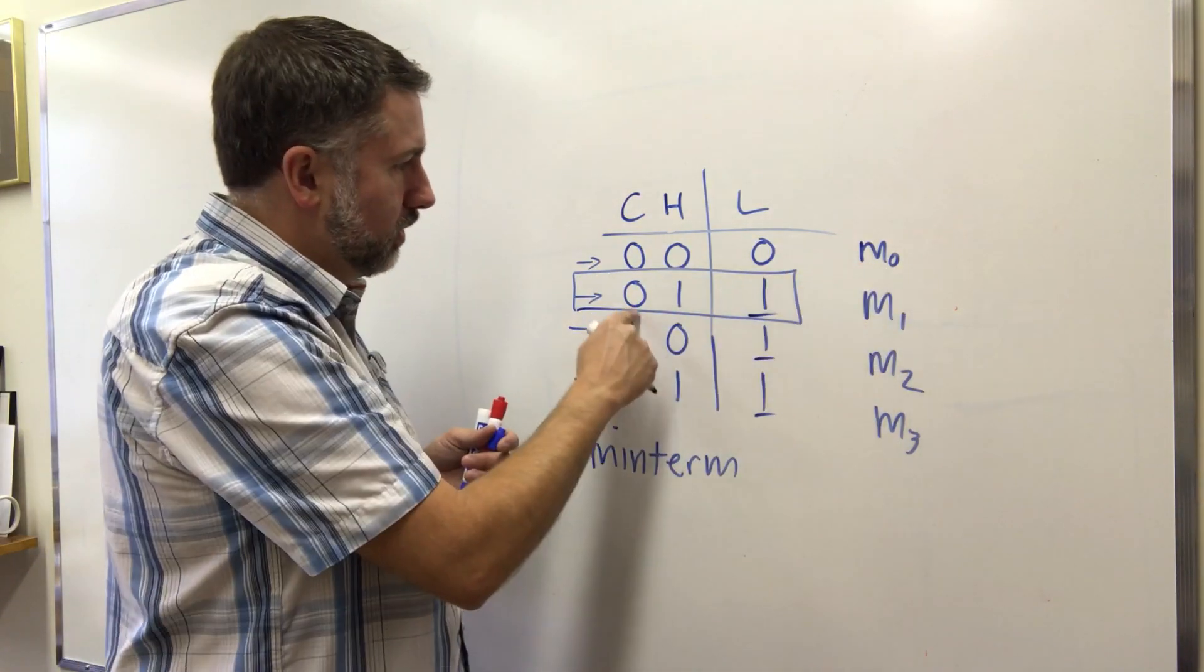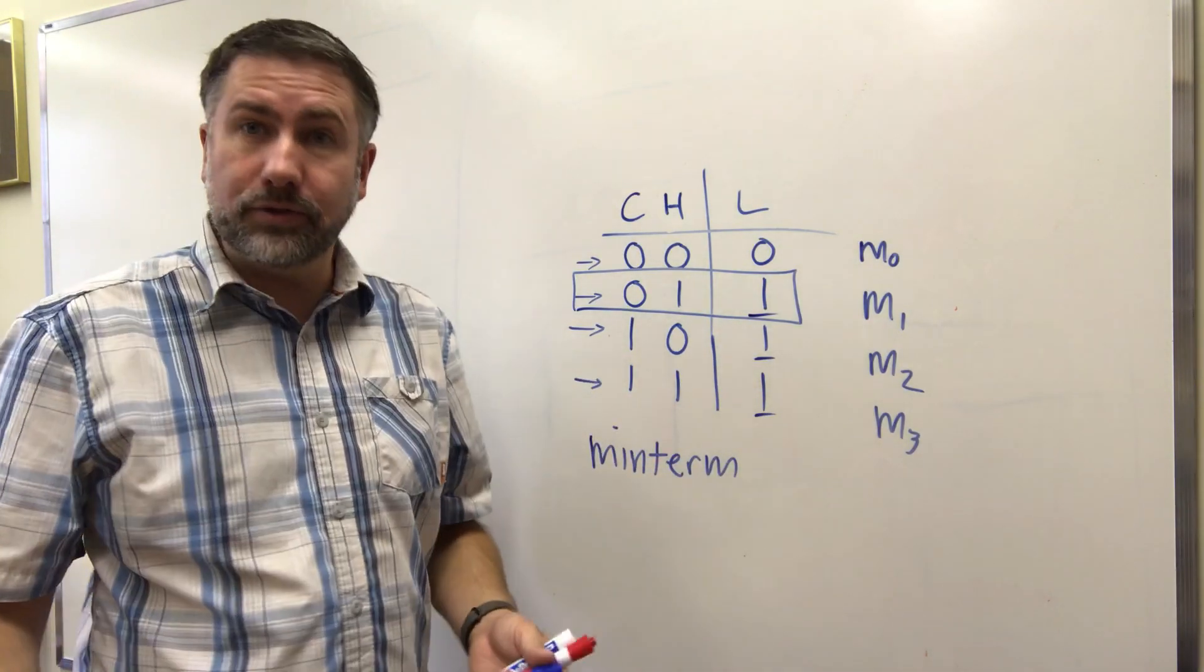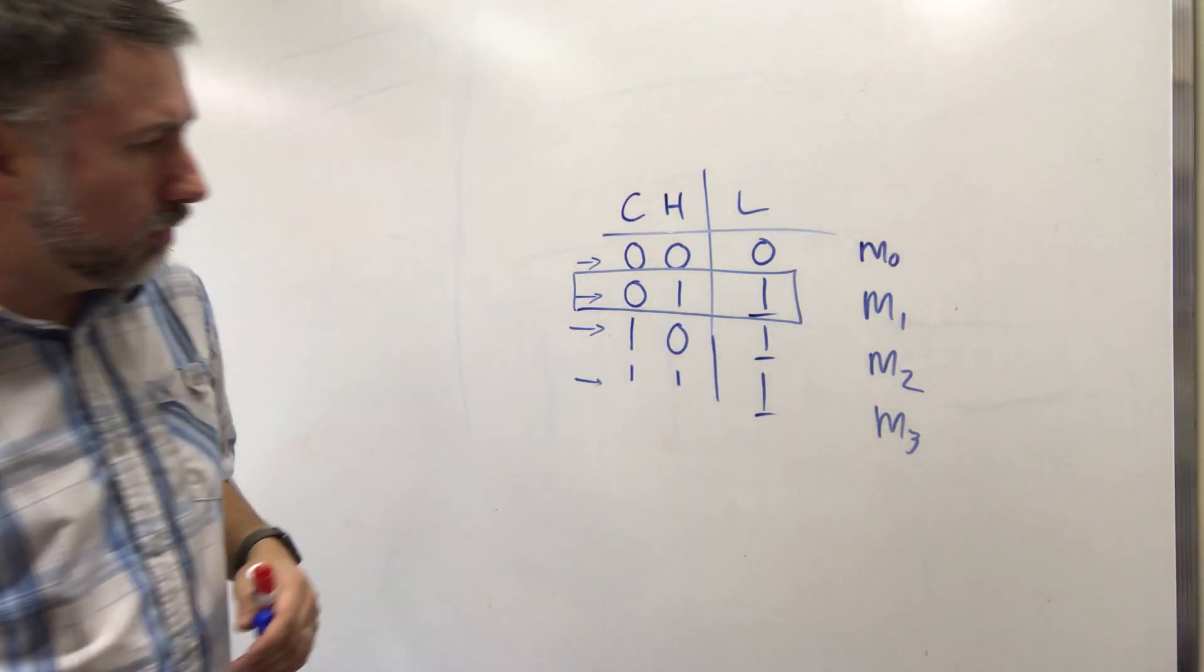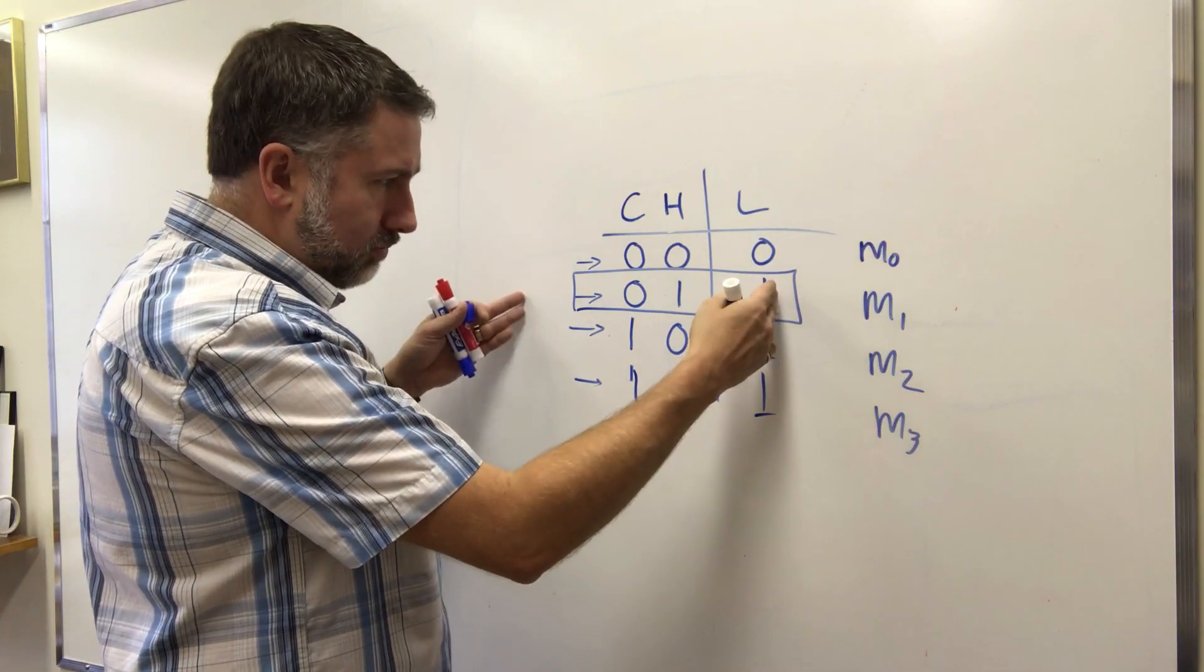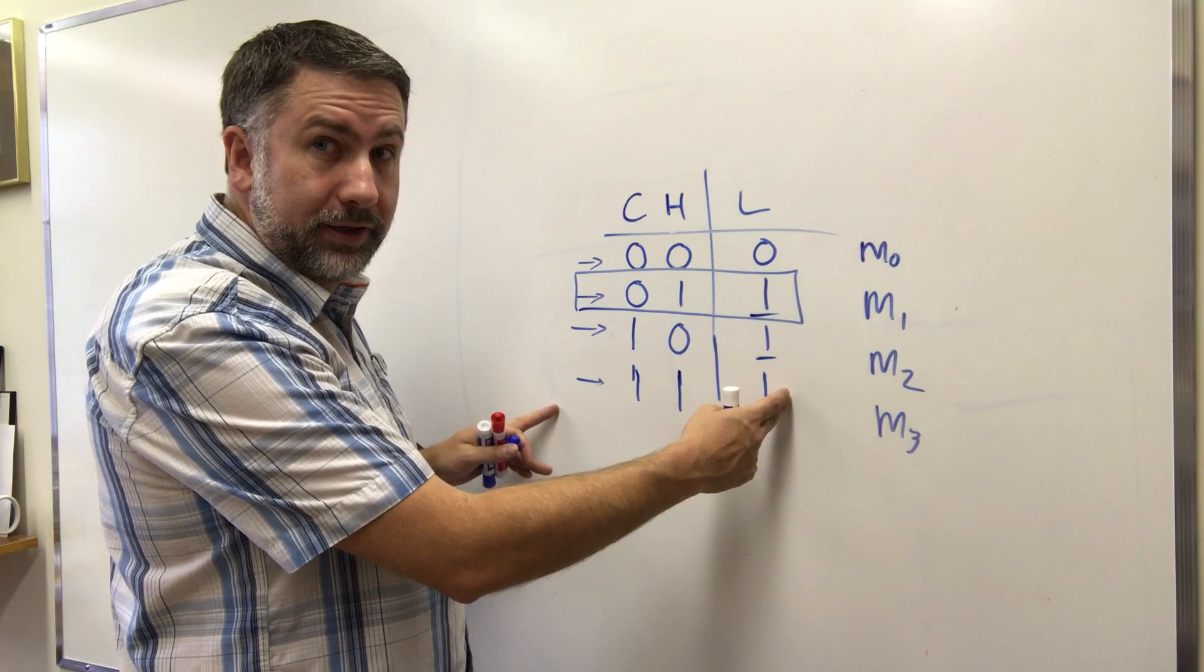So 0, 0 is 0, 1, 2, and 3. Those are our minterms and we can draw out the original function that we had in a kind of shorthand using these minterms. So our original function indicated by terms that represent what outputs would be one in the expression.